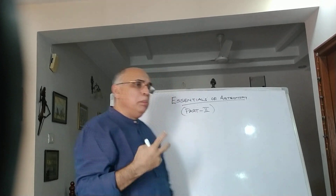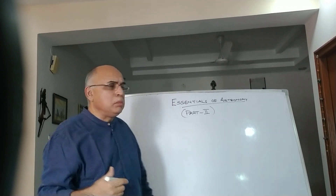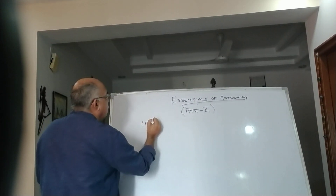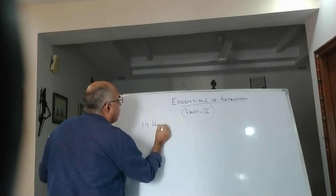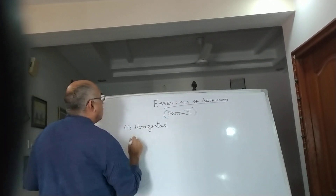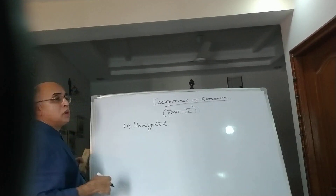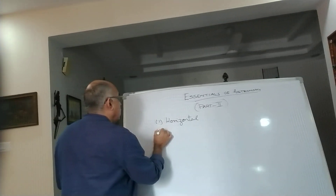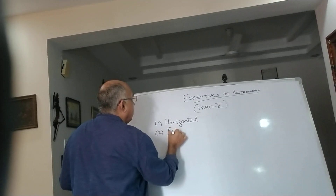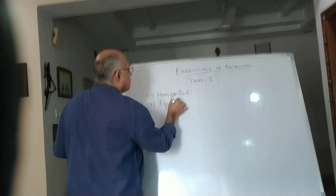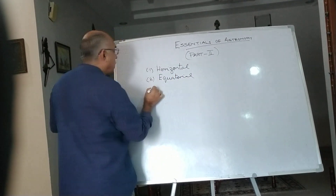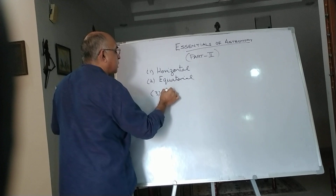I will be discussing three coordinate systems. The first one is called the horizontal coordinate system, where we use the horizon. Second, we use the equatorial coordinate system, where we use the celestial equator. And third, the galactic coordinate system.